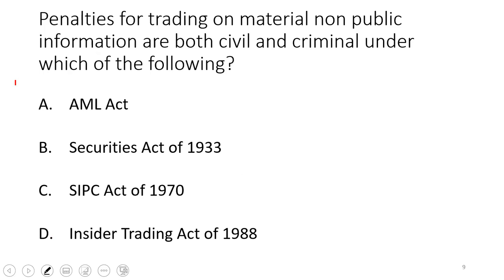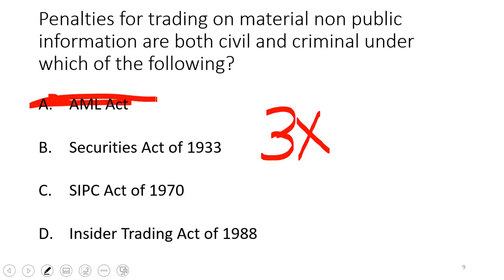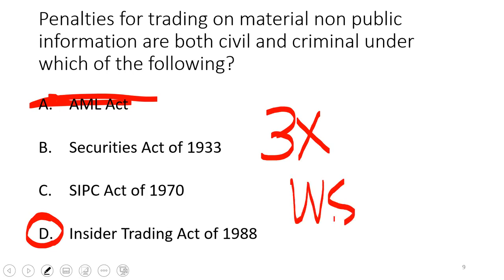Penalties for trading on material non-public information are both civil — meaning you write a check — and criminal — meaning you go to jail. The civil penalties are three times the profit made or losses avoided. There's no such thing as the AML Act. The Securities Act of 1933 is the Prospectus or Paper Act. SIPC protects you if a broker-dealer gets shut down. The correct answer is the Insider Trading Act of 1988. All broker-dealers must have a section on insider trading in their written supervisory procedures.